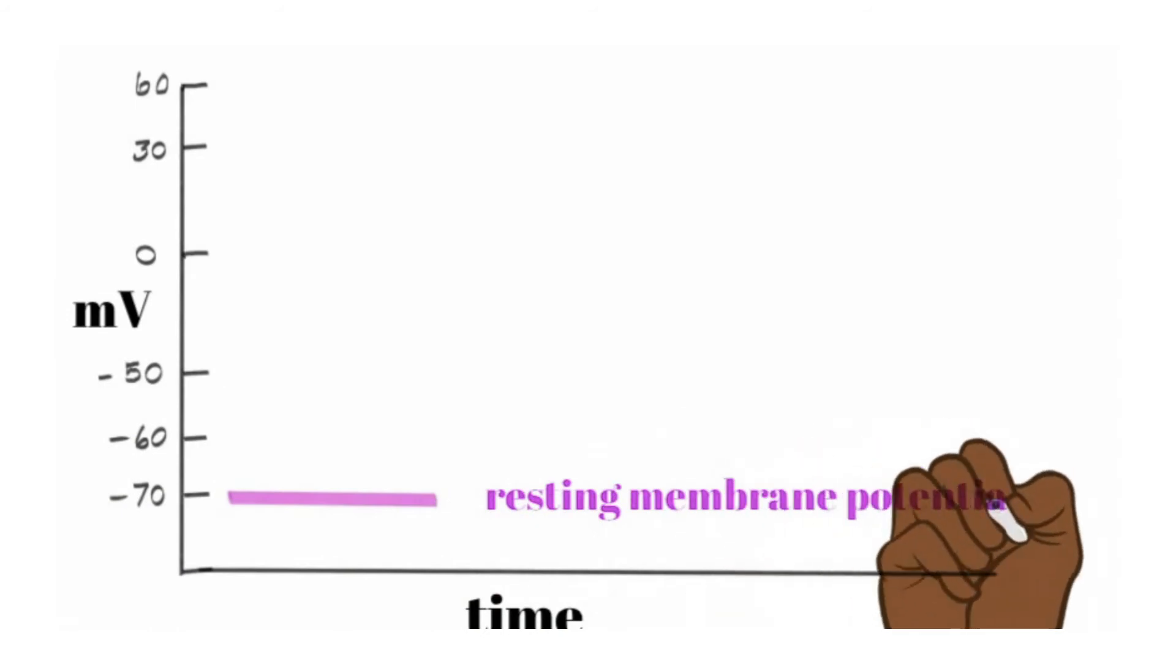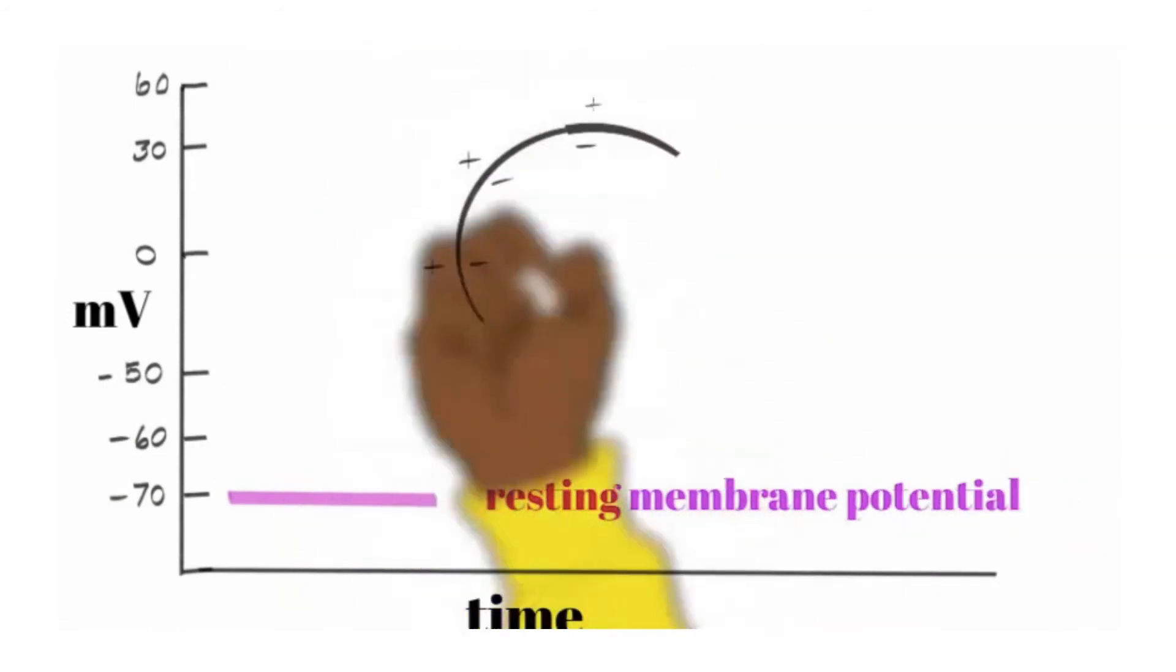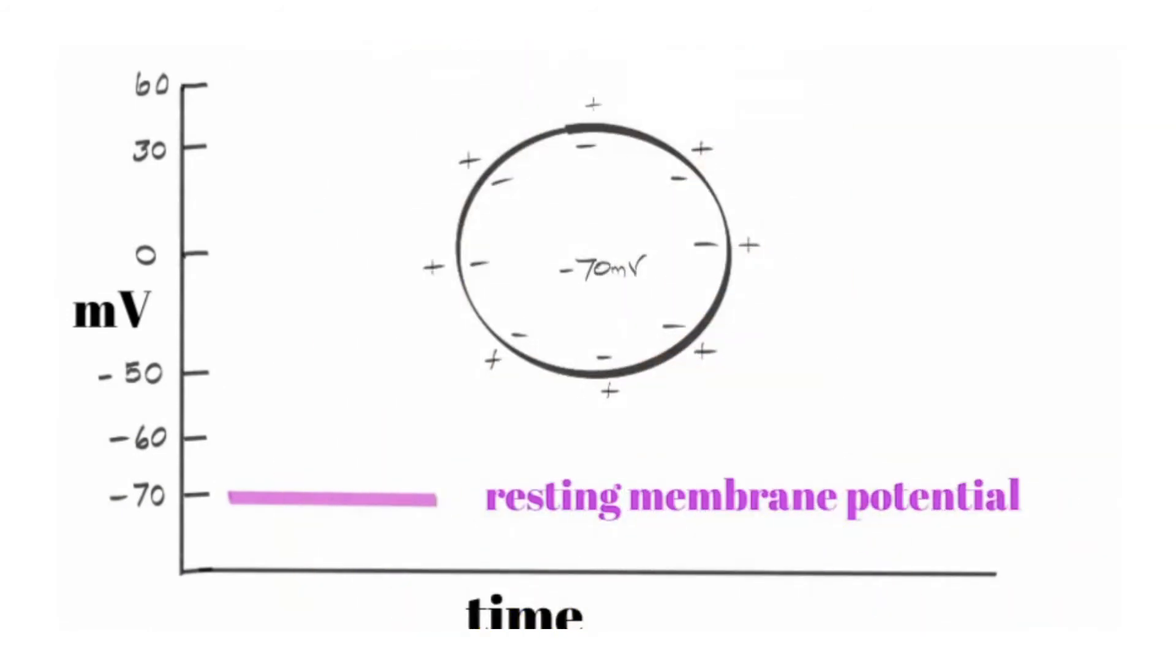When a cell is at negative 70 millivolts and not changing, that's what's known as the resting membrane potential. That is to say, the voltage or potential across the membrane between the positive region on the exterior of the cell and the negative region on the interior of the cell is the resting membrane potential. In this case, negative 70 millivolts.